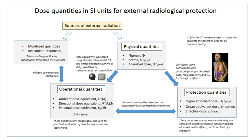Some effects of ionizing radiation on human health are stochastic, meaning that their probability of occurrence increases with dose, while the severity is independent of dose. Radiation-induced cancer, teratogenesis, cognitive decline, and heart disease are all examples of stochastic effects. The most common impact is the stochastic induction of cancer with a latent period of years or decades after exposure.